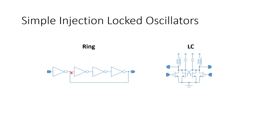This inverter here is sort of fighting with this inverter here for control of this node. The ring has its own resonant frequency it would like to operate at. But depending on the frequency and phase of the injecting input coming in from the left, this inverter may tug the oscillator frequency or phase to either be a little bit earlier, faster, or a little bit later or slower. So that is the injection.